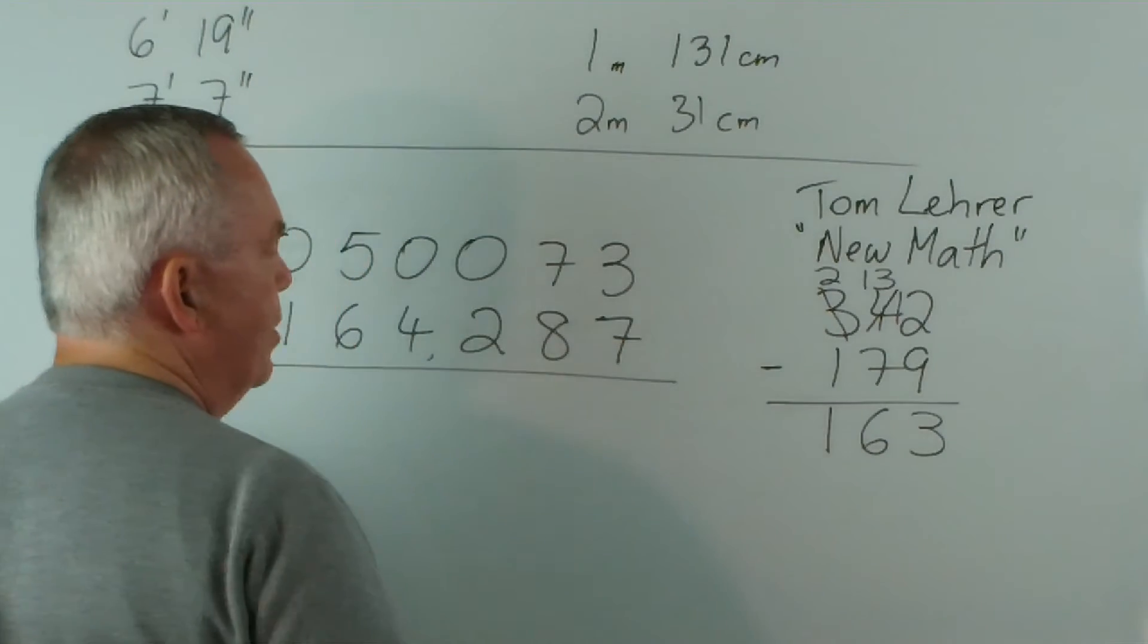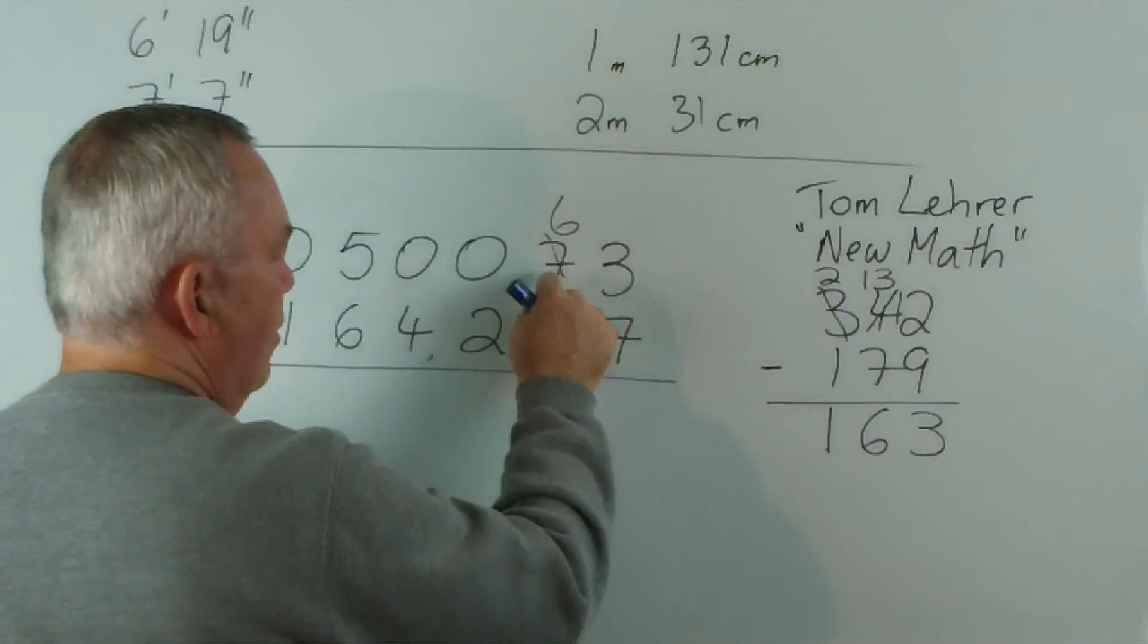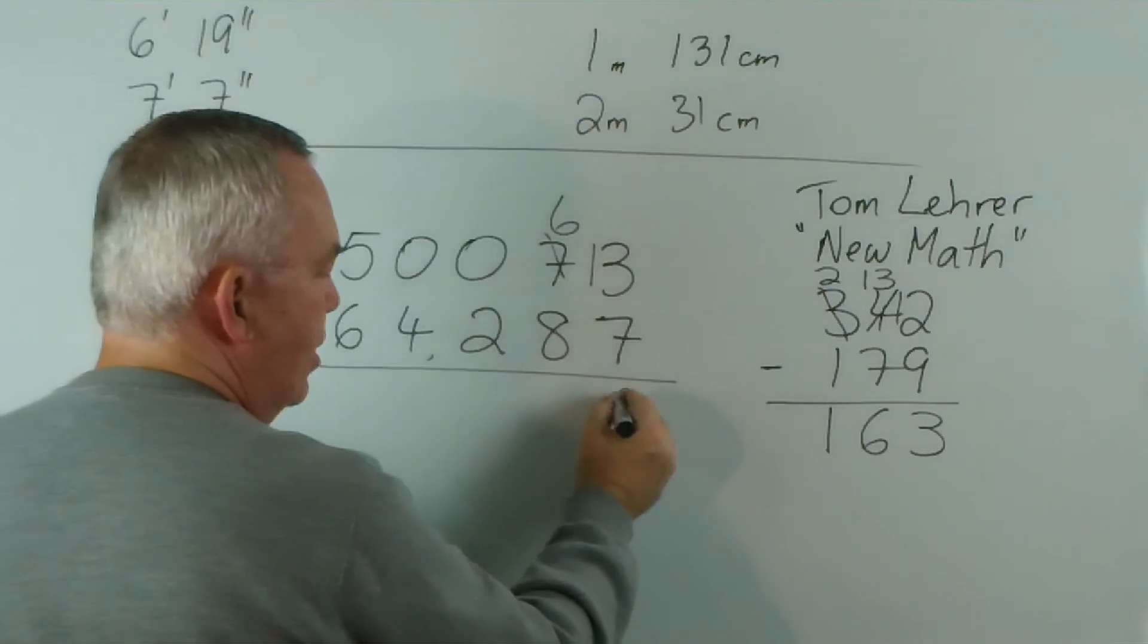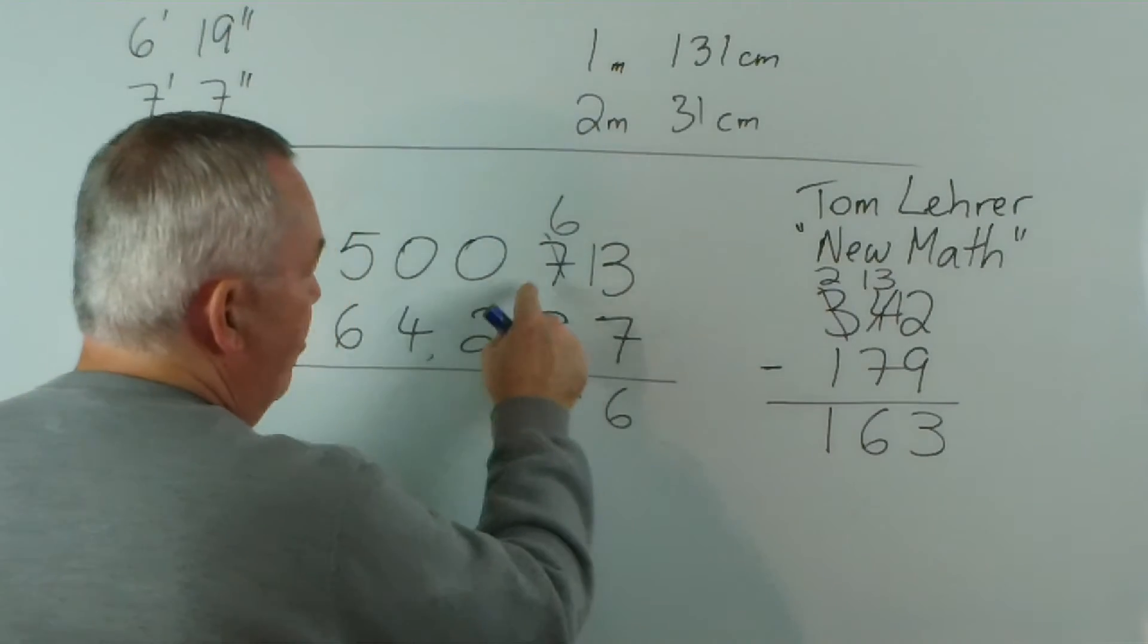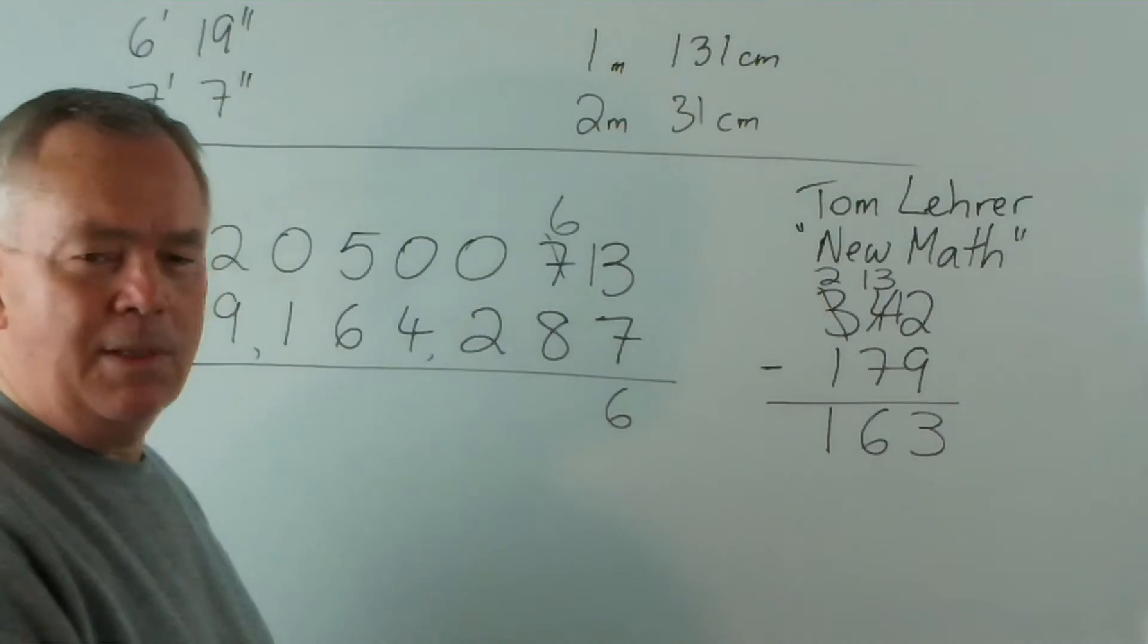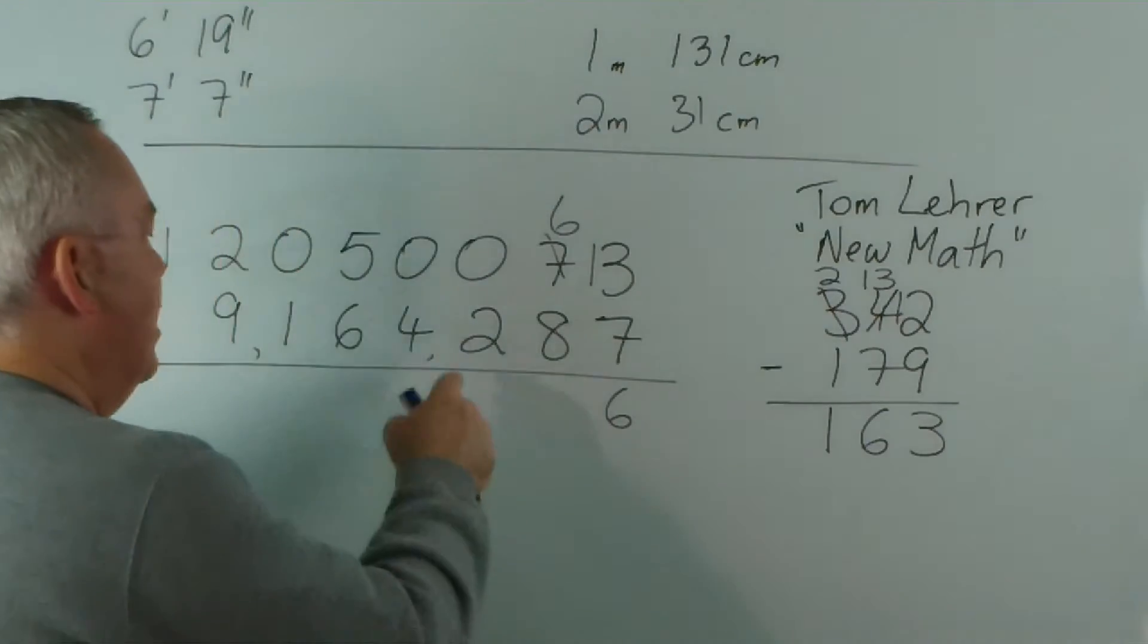7 from 3 we can't do, so we borrow. Drop this by one, bring one across. 7 from 13 is 6. 8 from 6 we can't do, so we borrow. And here's the refinement. This is the problem. There's nothing to borrow. In fact, there's nothing in the next column, either.